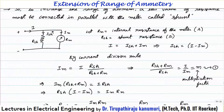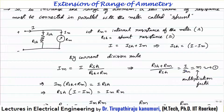Out of the total current i, some current will pass through the shunt resistor and some through the meter. By the current division rule, the current through the meter im equals i multiplied by Rsh divided by (Rsh + Rm). Rearranging, i divided by im equals (Rsh + Rm) divided by Rsh. This ratio i/im is called the multiplication factor m — the ratio of total input current to the current actually passing through the meter.